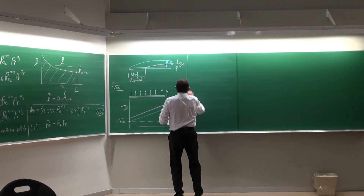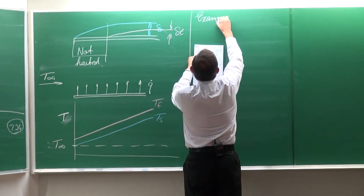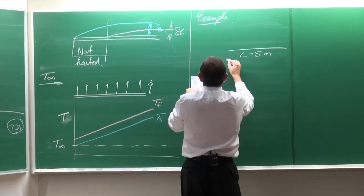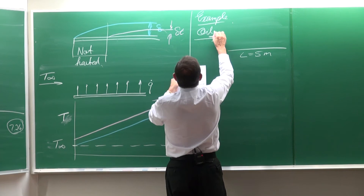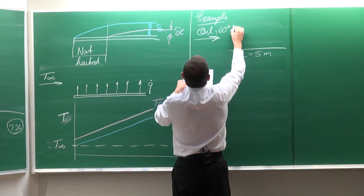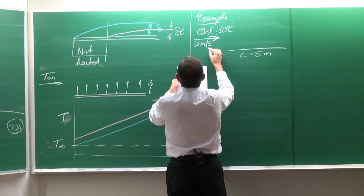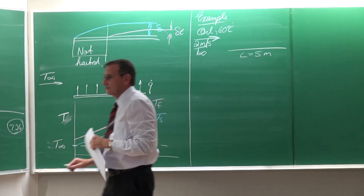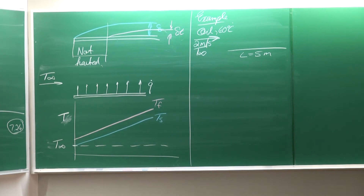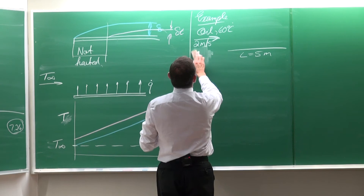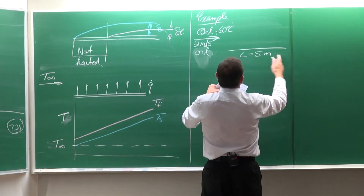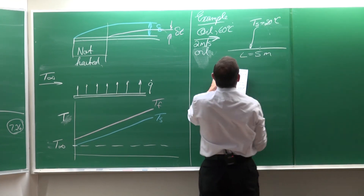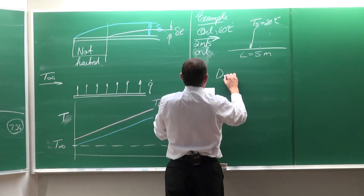Let's look at an example. Consider a plate of length 5 meters. Engine oil flows over this plate at a temperature of 60°C and a velocity of 2 m/s. The surface temperature of the plate is 20°C. We must determine the drag on the plate and the heat transfer rate.